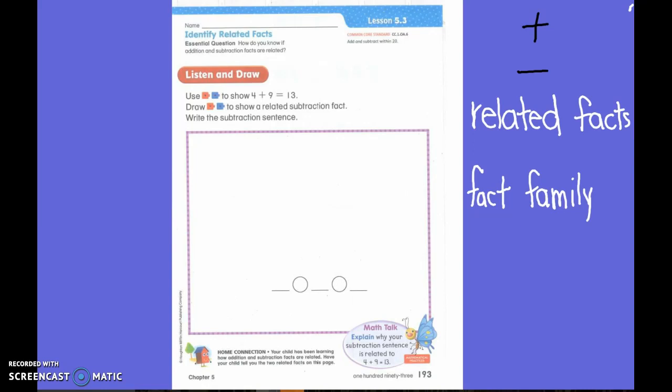So who can help me out? If I have 3 plus 2 equals 5, what else do I need to make my fact family? Not five of them. How many number sentences am I going to have?